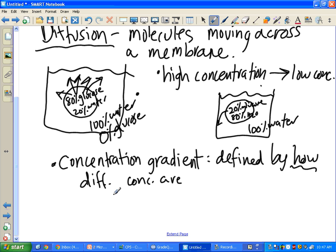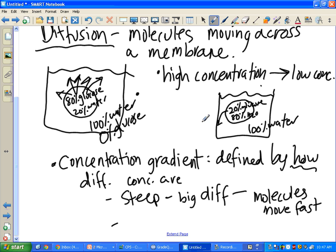So you can have a steep concentration gradient, which means a big difference, which means the molecules are going to move fast. If you have a lower concentration gradient like this one, it's going to be the opposite. They're not going to come out as fast. So that's diffusion. Diffusion goes with the concentration gradient. It goes along with it.